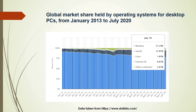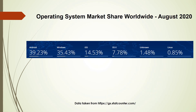Looking at the global market share: data from Statista for July 2020 shows that for desktop PCs, Windows holds 77% of the market share, followed by Mac OS at 17%, Linux at 1.85%, Chrome OS at 0.67%, and others at 2.67%. For overall market share through August 2020, data from StatCounter shows Android leading at 39.23%, followed by Windows at 35.43%, iOS at 14.53%, OS X at 7.78%, and Linux at 0.85%.